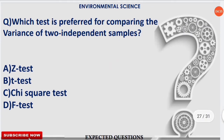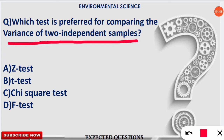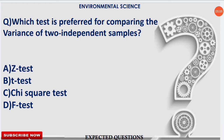The next question: which test is preferred for comparing the variance of two independent samples? The correct option is option D — F-test. Yes, the F-test is used to compare the variance of two independent samples. It is also known as Fisher's F-test, named after the scientist Fisher.